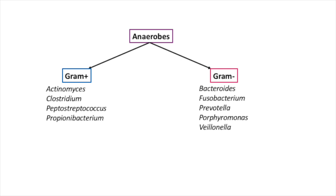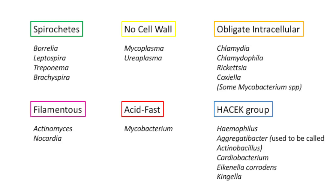The gram-negative anaerobes include Bacteroides, Fusobacterium, Prevotella, Porphyromonas, and Veillonella. The spirochetes include Borrelia, Leptospira, Treponema, and Brachyspira.